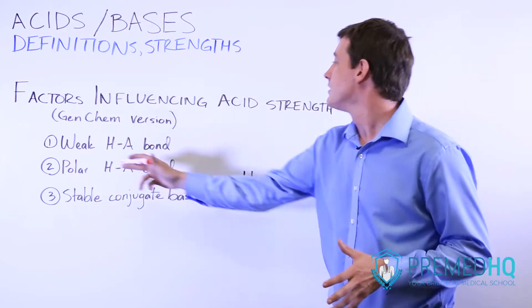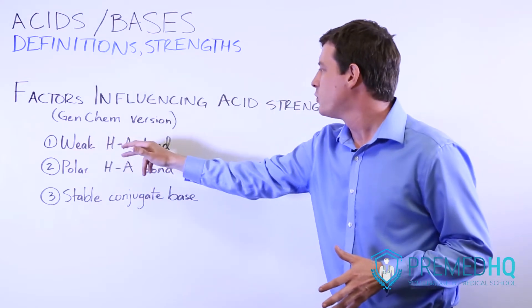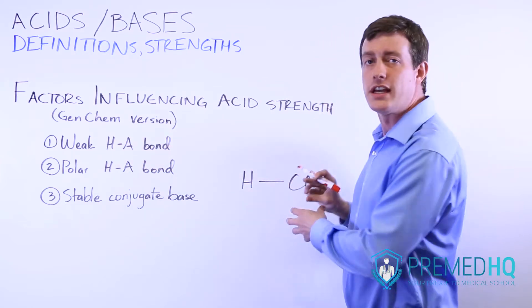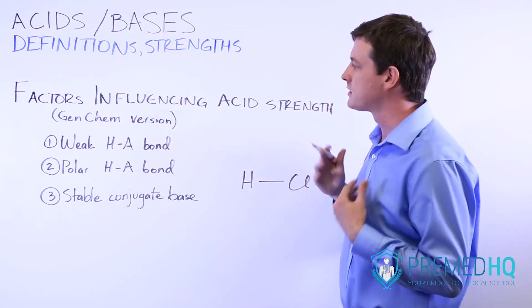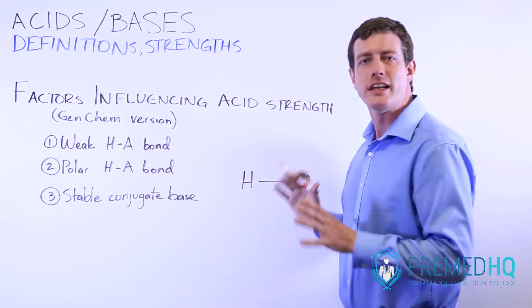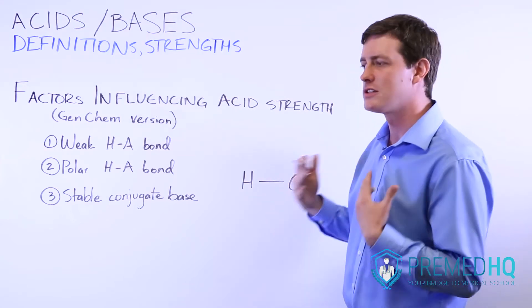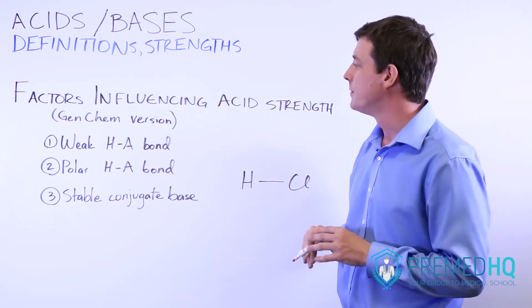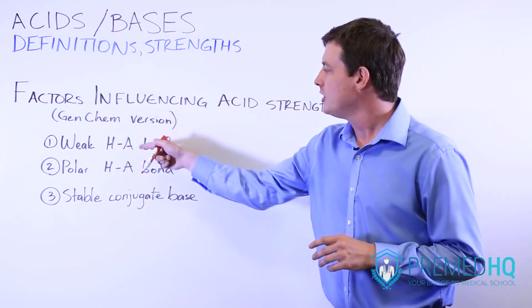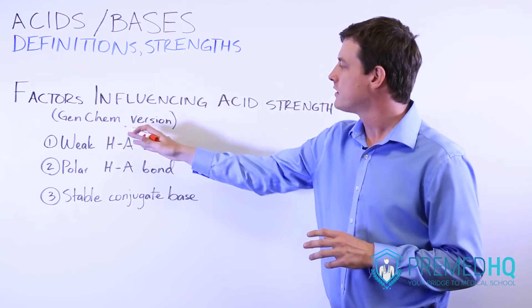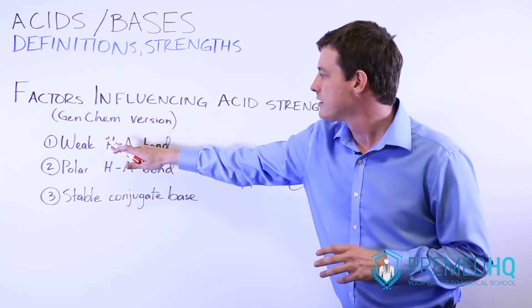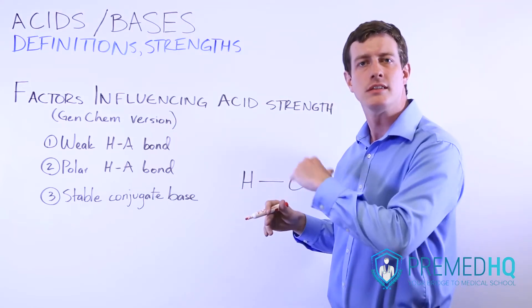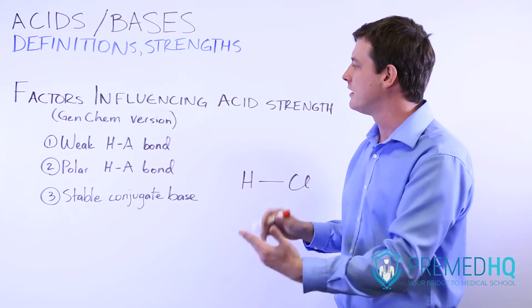The first of these is a weak bond between the proton and the other part of the acid. This is something that's specifically looking at Bronsted-Lowry and Arrhenius definitions in particular, because Lewis gets a bit more complicated and may not involve a proton. You want a weak H-A bond, which makes sense because if the bond between the proton and the rest of the acid is weak, that makes it more likely to donate that proton and function as an acid.